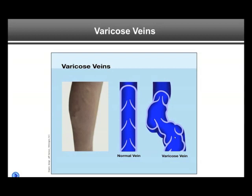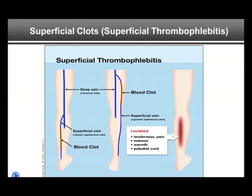Varicose veins can be removed by vascular clinics and vascular surgeons, but the majority of people with varicose veins will not develop DVT or PE. Now, superficial thrombophlebitis refers to clots in veins that are relatively close to the surface of the skin. Here you see the leg, the deep vein, and also superficial veins called the lesser saphenous and greater saphenous vein.